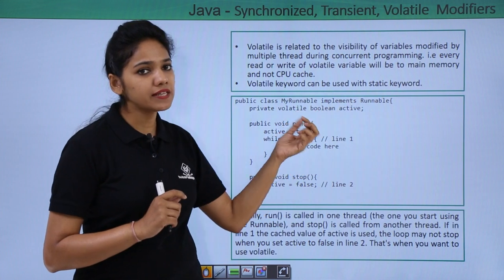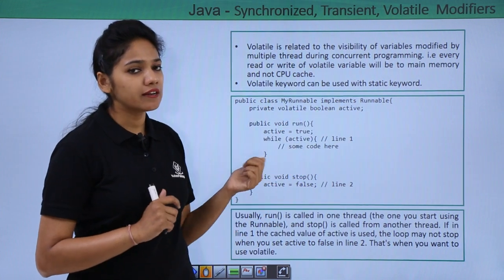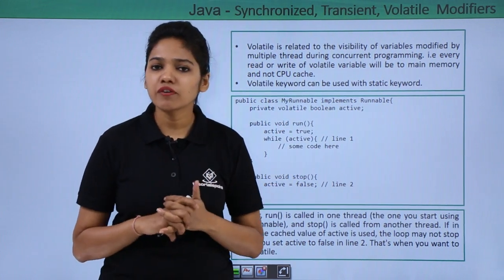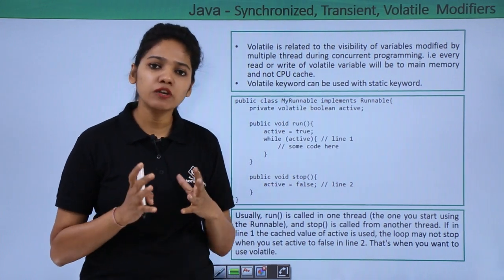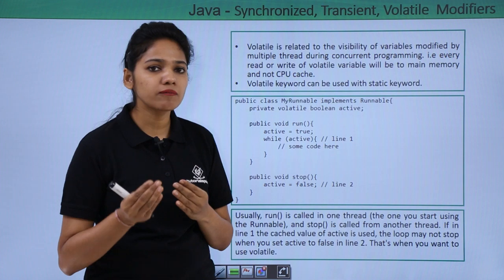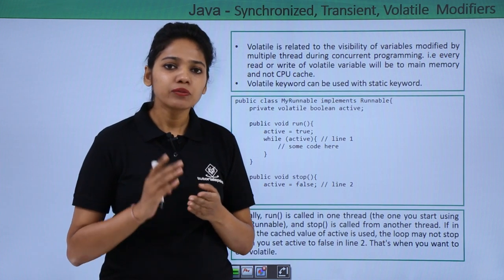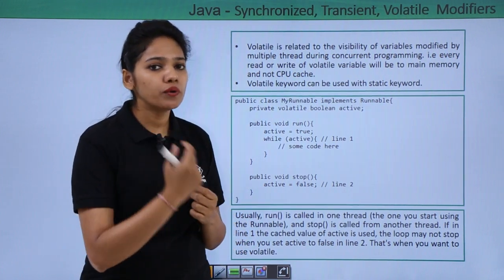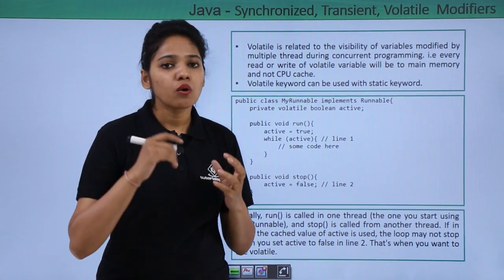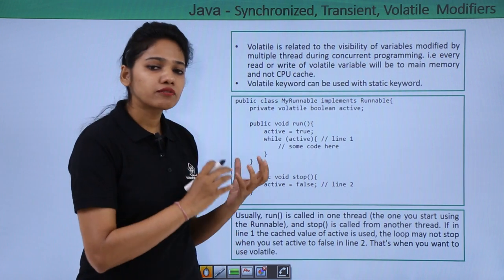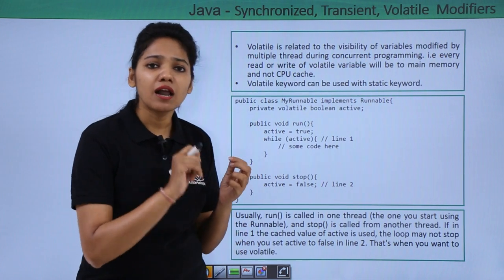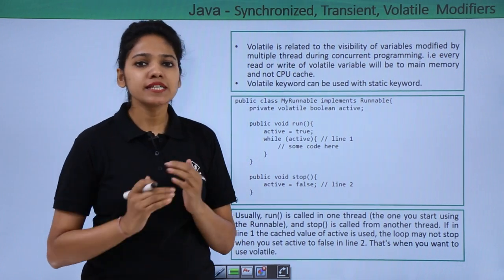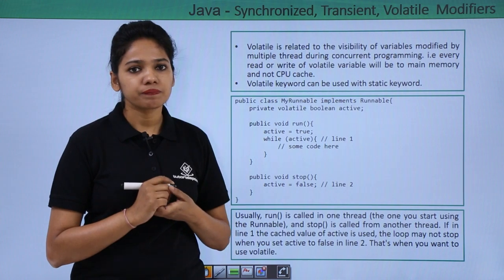So these three kinds of modifiers — synchronized, transient, and volatile — are mainly used in the concept of threading to decide which task will hold which memory, which variables are locked up, and which resources are not accessible.